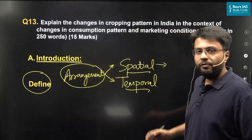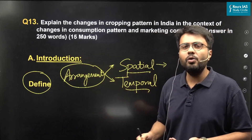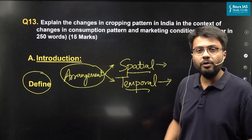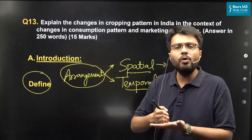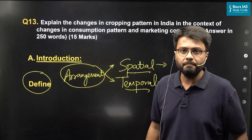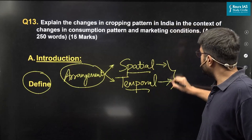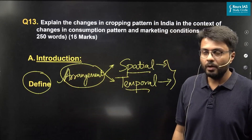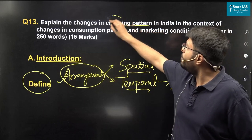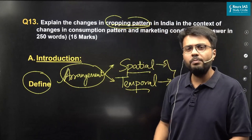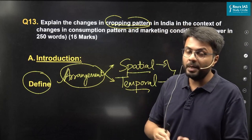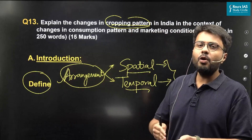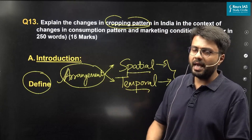Spatial arrangement refers to what kind of crops are grown in different areas of a particular country, whereas temporal arrangement refers to what kind of crops are grown in different segments of an entire year. These two factors play a key role in defining cropping patterns. The cropping pattern in the country is also influenced by many factors such as government policies, changes in dietary preferences, and long-term agricultural practices of a particular area.